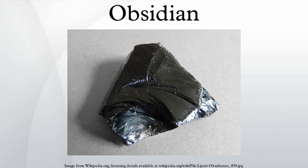Obsidian is a naturally occurring volcanic glass formed as an extrusive igneous rock. It is produced when felsic lava extruded from a volcano cools rapidly with minimum crystal growth. Obsidian is commonly found within the margins of rhyolitic lava flows known as obsidian flows, where the chemical composition induces a high viscosity and polymerization degree of the lava. The inhibition of atomic diffusion through this highly viscous and polymerized lava explains the lack of crystal growth.